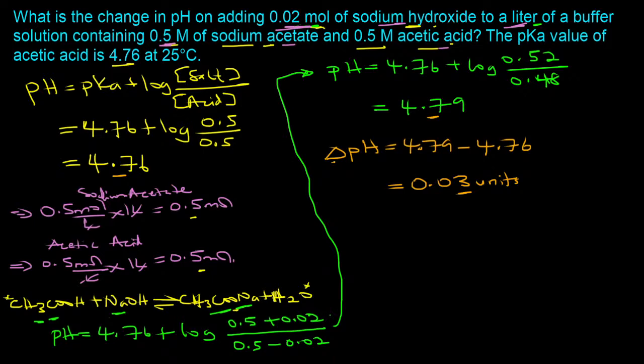To recap — because it's important to emphasize — most of the action happens when you stress your buffer with either the base or the acid. Here we have the weak acid and salt system stressed with a little base. When that happens, the amount of salt increases by the mole amount of base, and the amount of acid decreases by the same mole amount. If you have questions, leave them in the comments and I'll address them as soon as I see them.